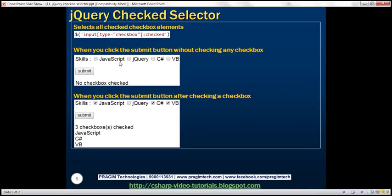Now let's look at an example using checkboxes. The selector will select all input elements of type checkbox, and the colon checked selector ensures only those checkboxes that are checked are returned. We'll have skills listed on the page — JavaScript, jQuery, C#, and VB. Clicking submit without any checkbox checked displays 'no checkbox checked.' With three checked — JavaScript, C#, and VB — we display the count of checkboxes checked and then the value of each on separate lines.